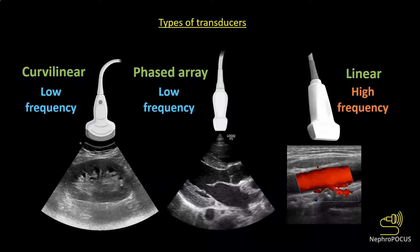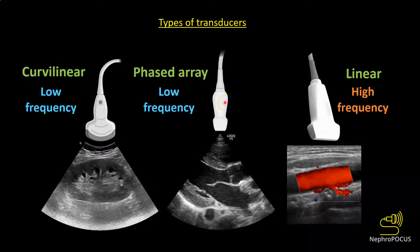There are three main types of transducers used in regular nephrology practice. First is the curvilinear or abdominal probe. Second is the phased array or cardiac probe. Third is the linear or vascular probe.